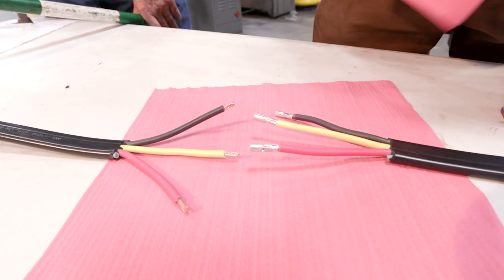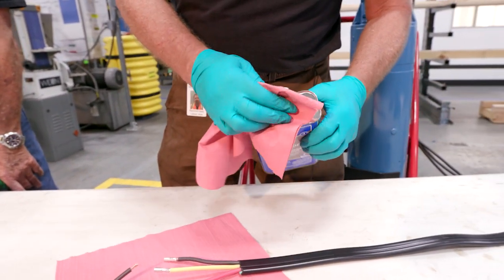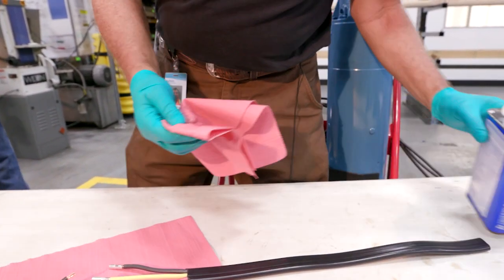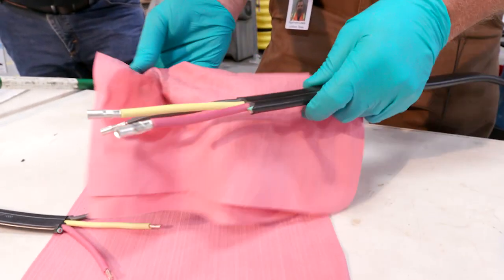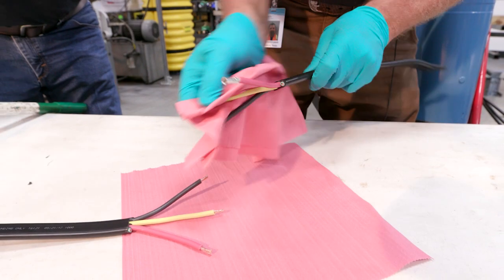Once we get to this point, we're going to take acetone. We're going to clean our wiring. We want to make sure it's clean. We're going to clean the wire, clean the connection on all parts.